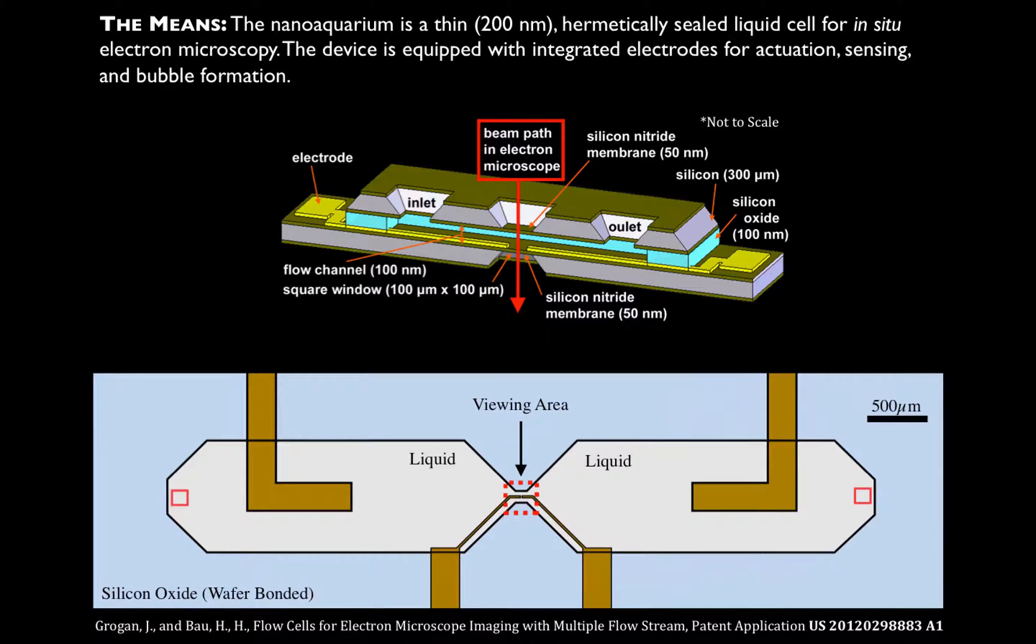So how do we do it? We use the nanoquarium, which is a home-built cell invented by Grogan and Bao here at Penn. What this is, is a hermetically sealed device made with standard silicon technologies that isolates a thin liquid layer in a hermetically sealed environment so that we can maintain near-atmospheric pressures within this device while still maintaining the high vacuum required for the electron microscope to work. Since we use standard batch processes, we can deposit electrodes in whatever configurations we want in order to have actuation and sensing, and we'll use those a little bit later.